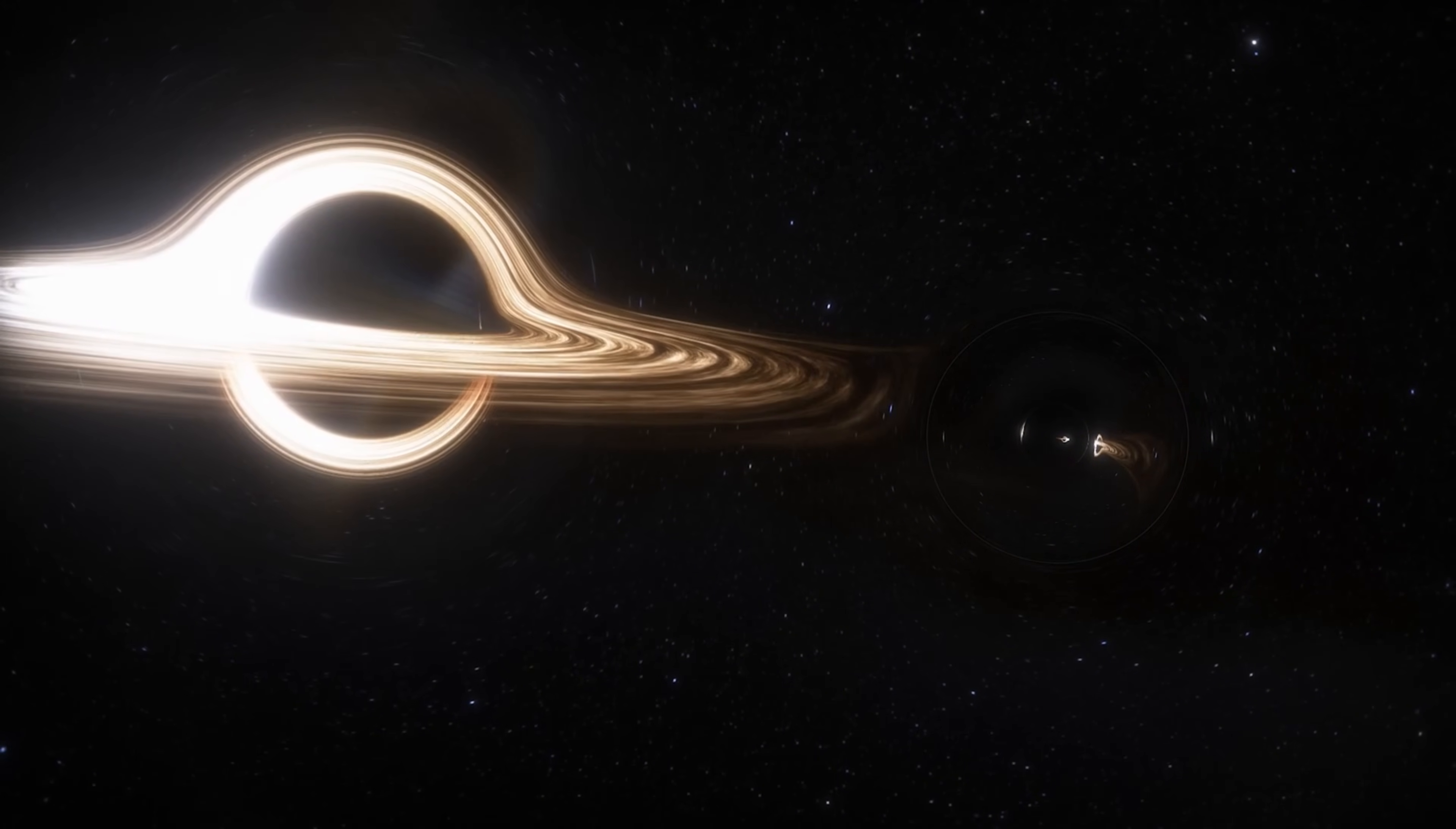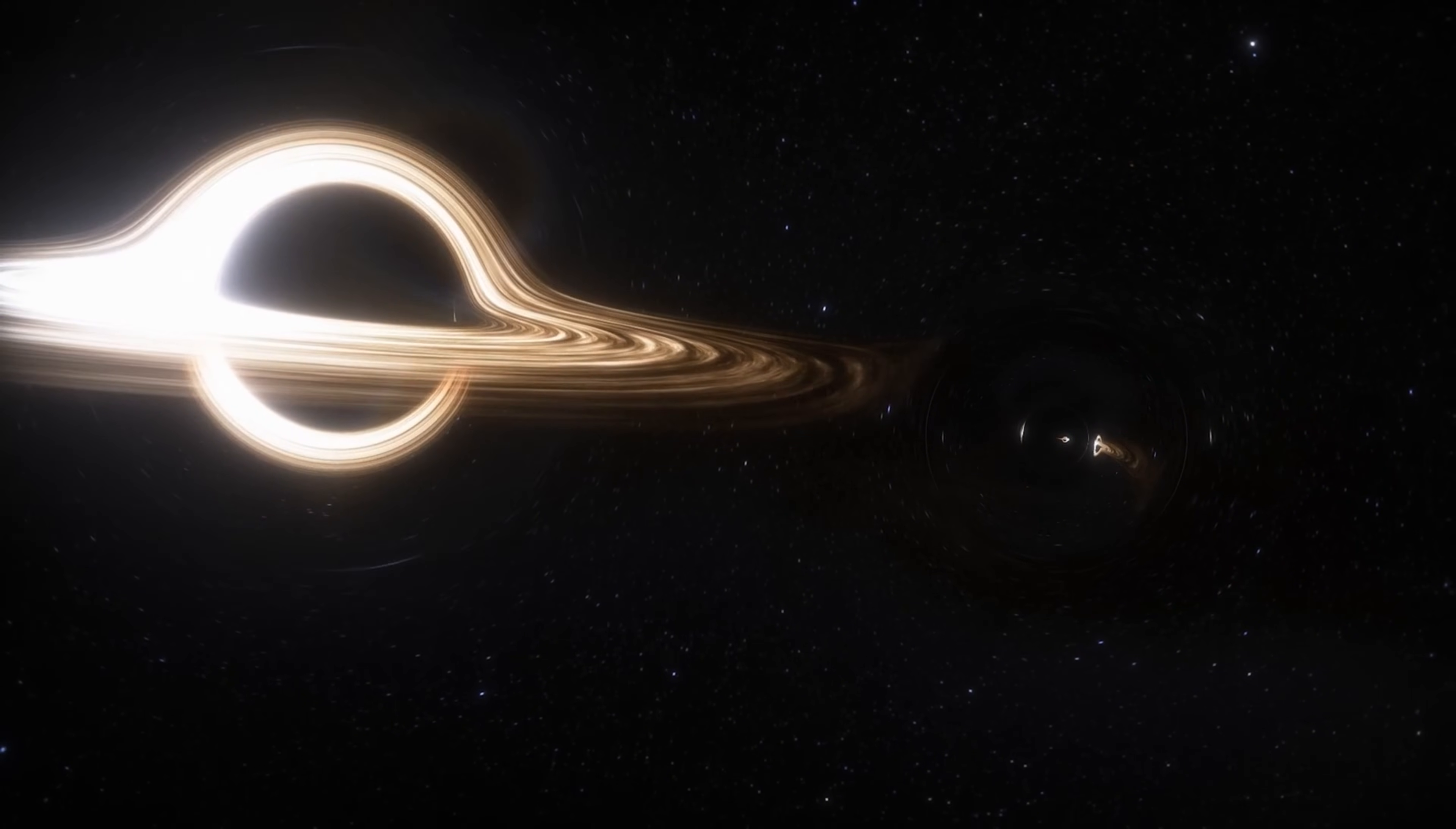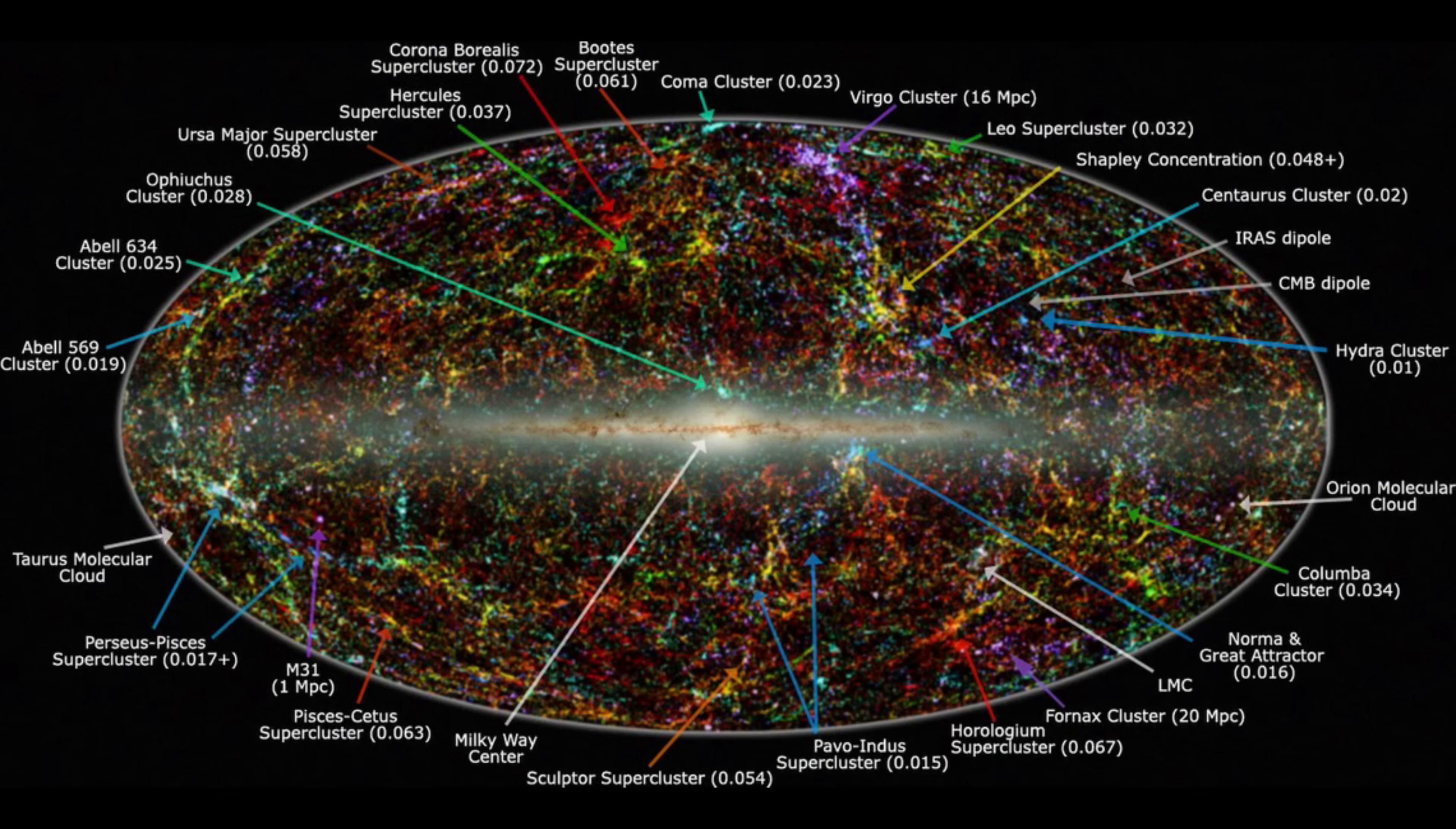The Great Attractor was discovered in 1987 by Alan Dressler, following decades of redshift surveys that map the peculiar velocities of galaxies. These surveys revealed that the Milky Way and other galaxies were moving towards a specific direction in the constellation of Centaurus.